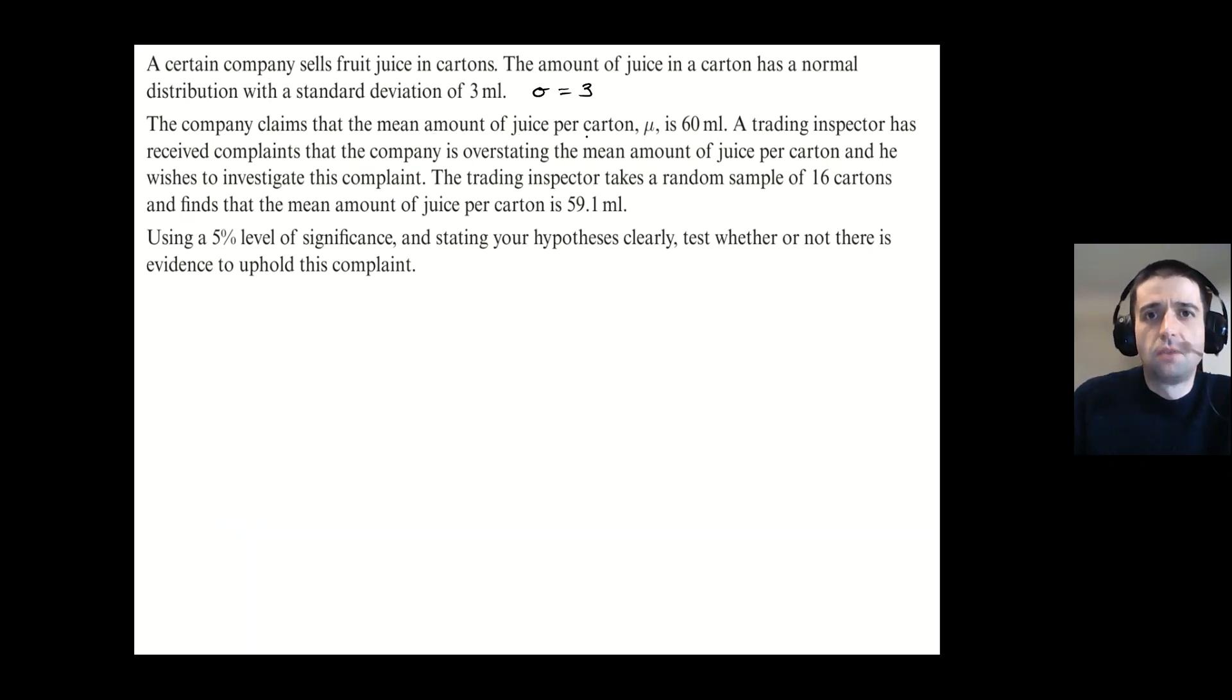Now, the company claims that the mean amount of juice per carton μ is 60 mils. So the company is claiming that they have a population X, which is following a normal distribution with a mean of 60 and a variance of three squared. Now, this is really important here: the standard deviation is three, and what we write here is three squared. And it's really important you do that so you don't make a mistake in the next step.